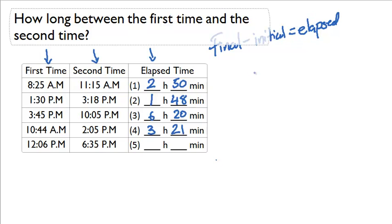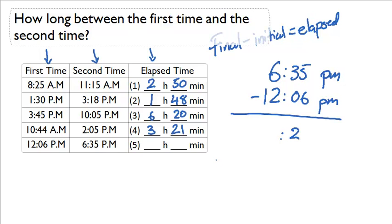And the last problem that we have is 6:35 minus 12:06. Now, since both of these are PM, and by the way, this should be pretty easy right here. 35 minus 6, that should be 29. But here is the difficult part.